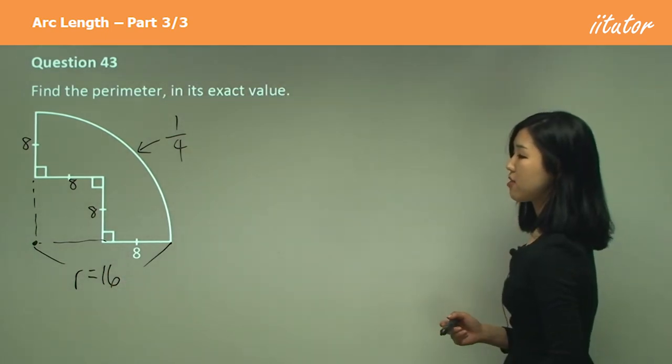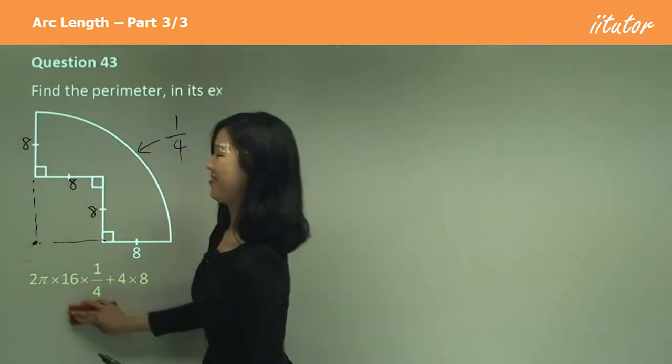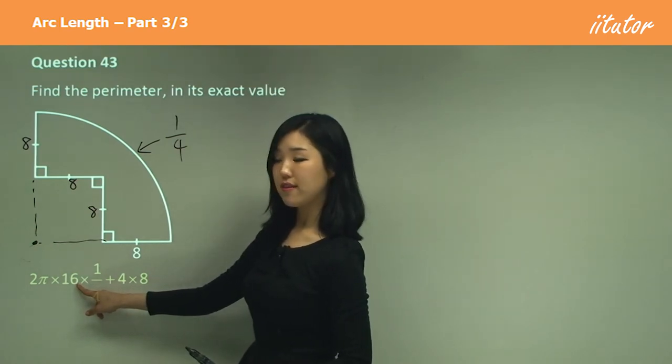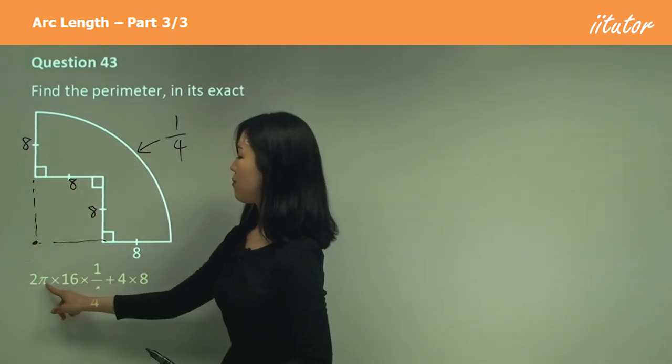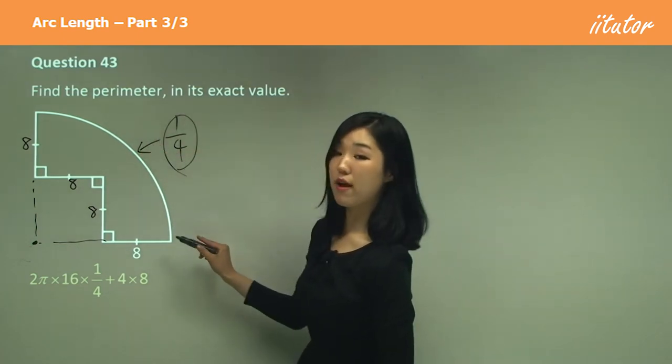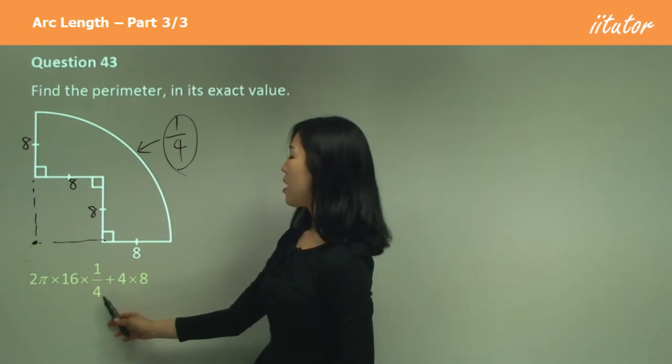So let's go ahead and find the arc. So it's going to be 2πr. Remember how I said the radius is 16? So 2π times 16 times a quarter because that's the part of the fraction of the circumference that we want.